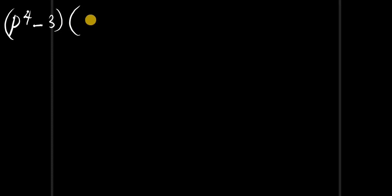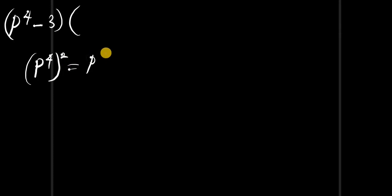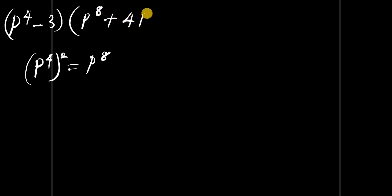Continuing to the next slide, we have p^4 minus 3, times p to the power of 4, all to the power of 2. Using the identity, p^4 squared equals p^8, so this bracket gives p^8 plus 4 times p^4 plus 12, equals zero.